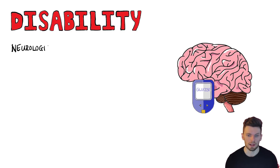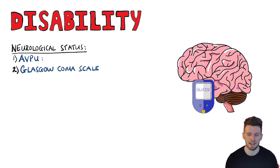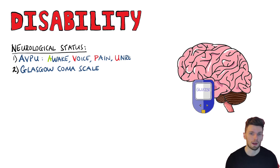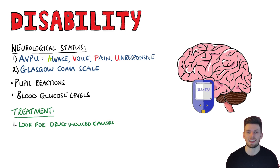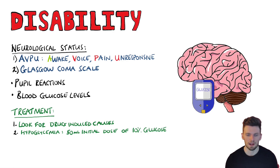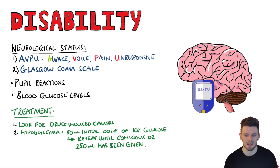D stands for disability. This is where you assess the neurological status of the patient, including their consciousness, using initially the AVPU system — Awake, responding to Voice, responding to Pain, or Unresponsive — followed by the Glasgow Coma Scale for a more in-depth look. Pupil reactions and blood glucose should also be assessed. Management includes checking for drug-induced causes and other causes listed in the AEIOU-TIPS mnemonic. Hypoglycaemic patients are generally given a 50 ml initial dose of 10% glucose solution, followed by subsequent doses every minute until the patient regains consciousness or 250 ml has been given.